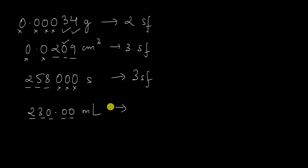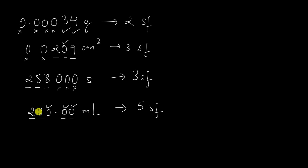Five significant figures: 2, 3, 0, 0, 0. Because there is a decimal, all zeros that come after the non-zero digits are going to be significant. So all of them are significant, giving us five significant figures.